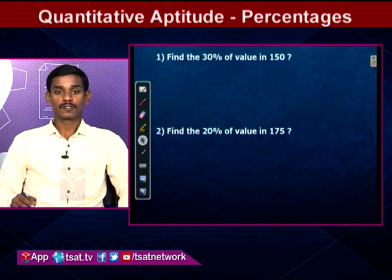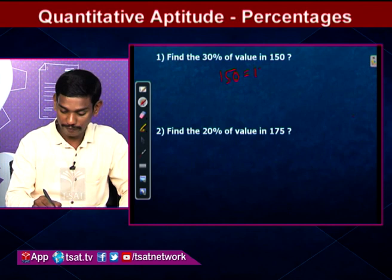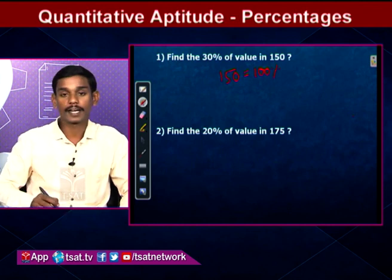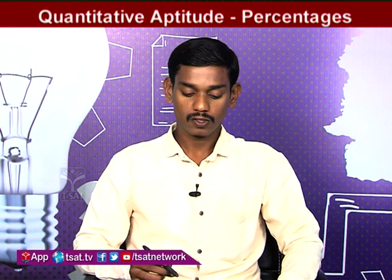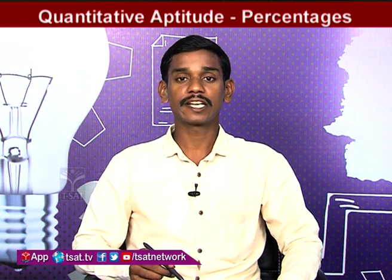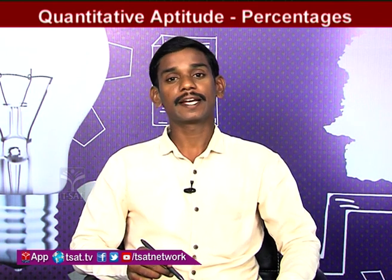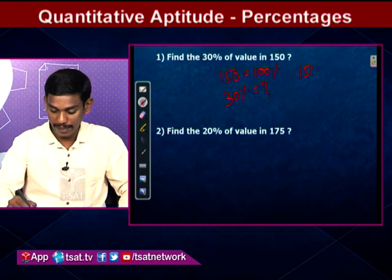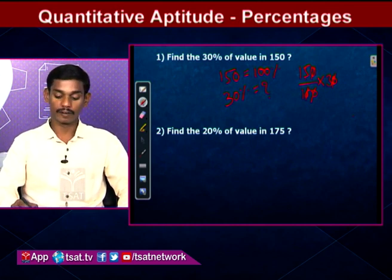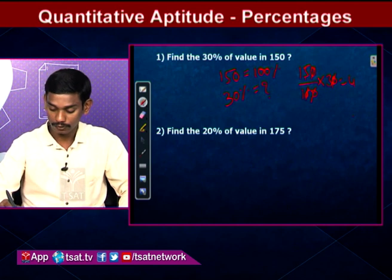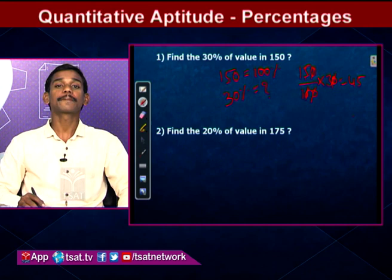Find 30% of 150. Here 150 equals 100%. Using the formula: 150/100 × 30. The zeros cancel — 15 × 3 = 45. So 45 is the 30% value in 150.